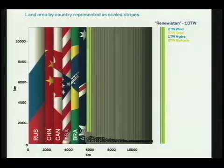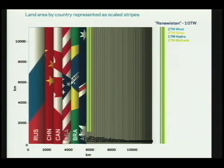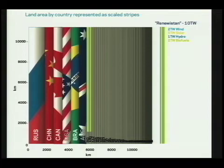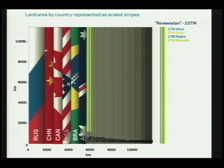This is really the crux of why you want to start measuring things in power or watts instead of in carbon. Even though carbon is the problem, if we solve for carbon, we create for ourselves some new problems. This is a very unusual map of the world — that square you see there represents the land area of every country in the world. The biggest country is Russia, followed by China, Canada, USA, Brazil, and Australia.